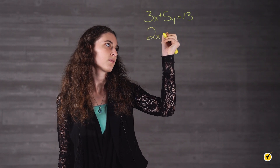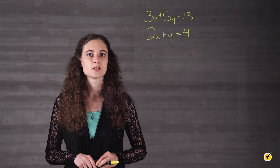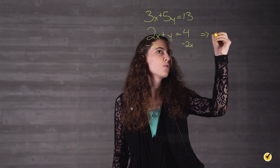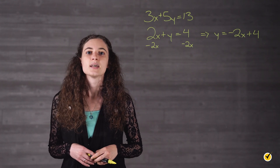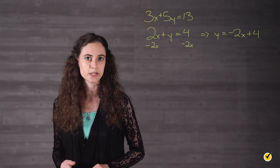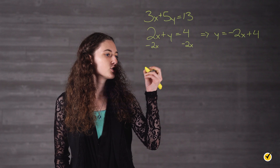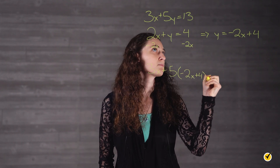Let's take a look at the process for using the substitution method. For this example, we'll use the system 3x plus 5y equals 13, and 2x plus y equals 4. The second equation appears to be easier to solve for y, so let's solve for y by using inverse operations and subtracting 2x from both sides. This gives us y equals negative 2x plus 4. This is step 1.